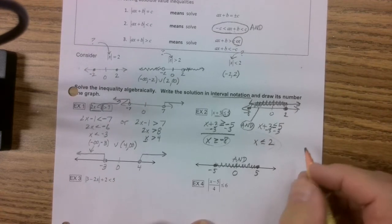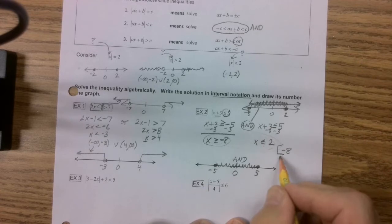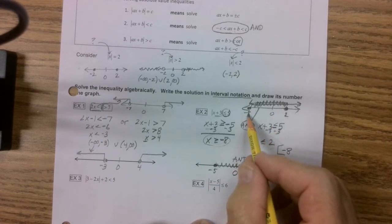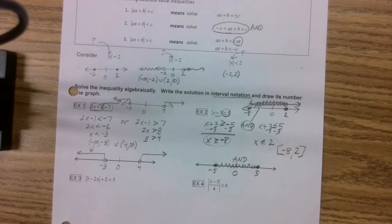So my final answer would be negative 8 brackets. Why? Because it's greater than or equal to negative 8, comma 2, bracket.